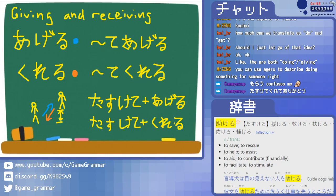You can extend that to basically any verb. You can say tabete ageru, which is 'I'll eat it for you,' and that makes sense in some situations. But in others it might sound a bit weird — like if someone already gave you food and you say tabete ageru, it sounds like you're eating it out of pity. On the other hand, if someone says 'man, I can't eat anymore,' you can say tabete ageru — 'I'll eat it for you, just give it to me.' So there are situations where you should use it and situations where you probably shouldn't. I think that wraps up kureru and ageru pretty nicely — do you have any questions?